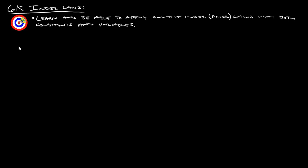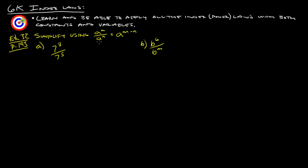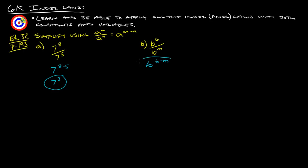Example 32 from page 193: simplify using the division law. You subtract the exponents, but only when the bases are the same. 7 to the 8 minus 5 gives us 7 to the 3rd. And b to the 6 minus m — you can't simplify 6 minus m, so you just leave it as b to the 6 minus m.